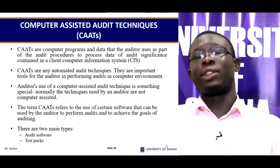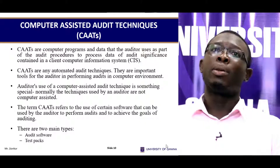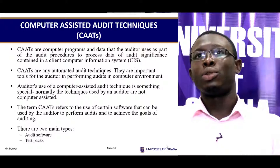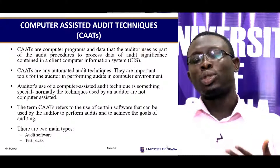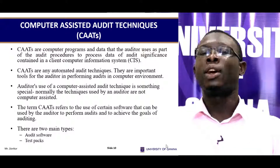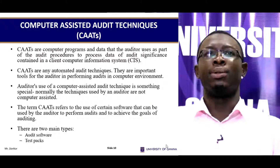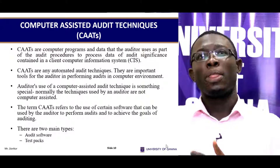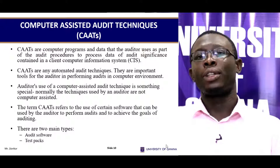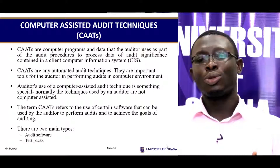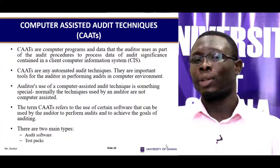Therefore, computer assisted audit techniques come in handy. CATs — computer assisted audit techniques — are computer programmes and data that the auditor uses as part of audit procedures to process data of audit significance obtained from a client's computer information systems. They are important tools for the auditor in performing audits in a computer environment.